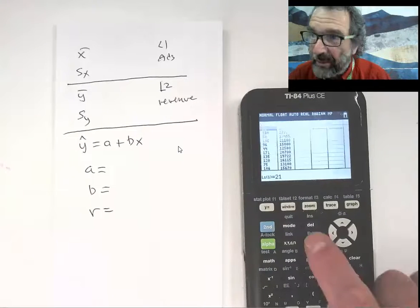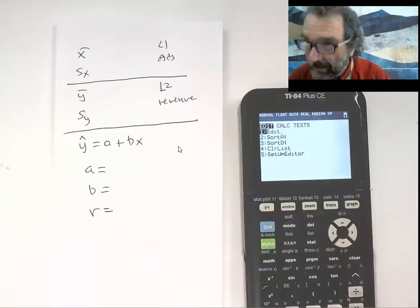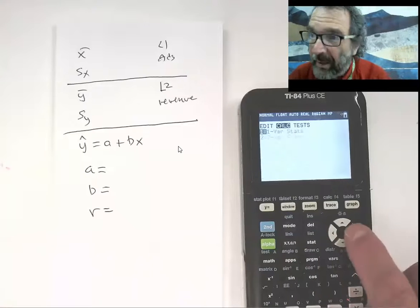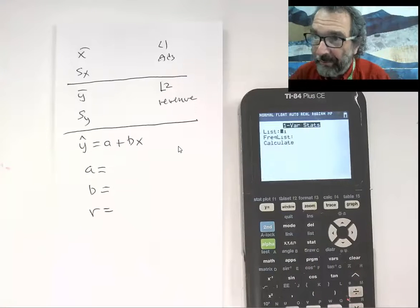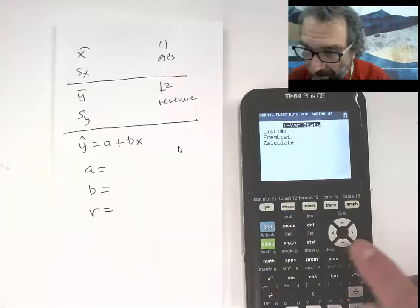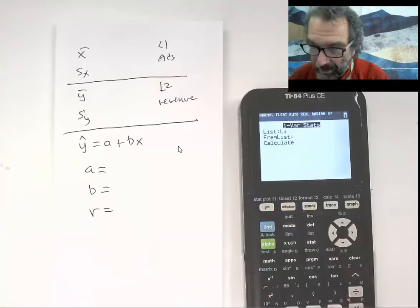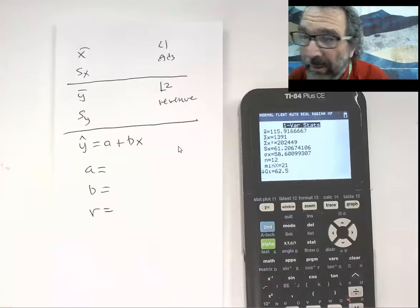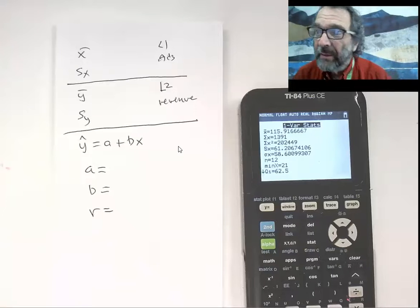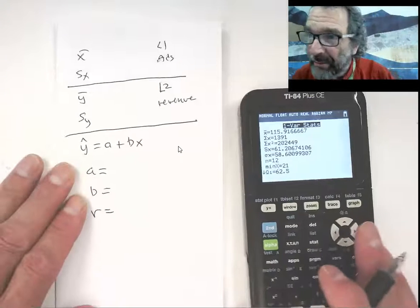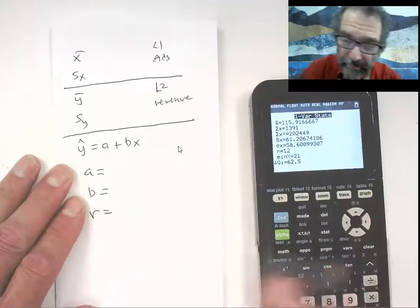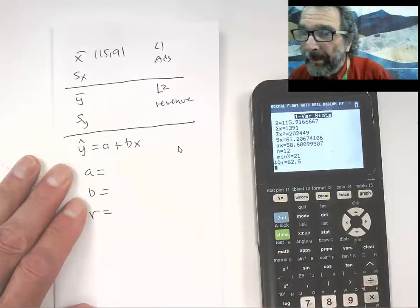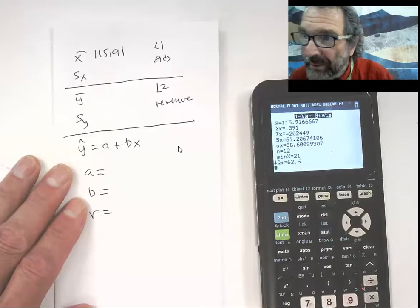So I'm going to go into stat, calc, one variable. I'm going to pick list one. Those are the x's. And so the average number of ads, oh that makes sense, 115.91. Okay and then Sx, 61.21.